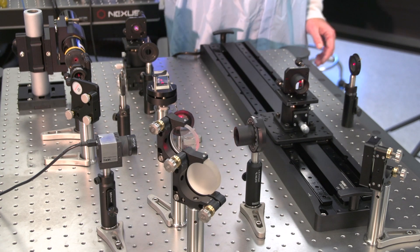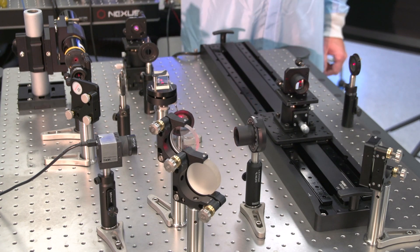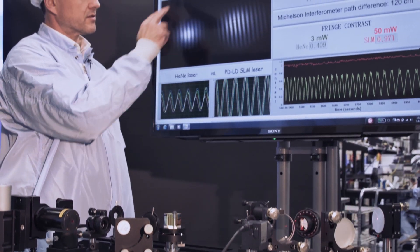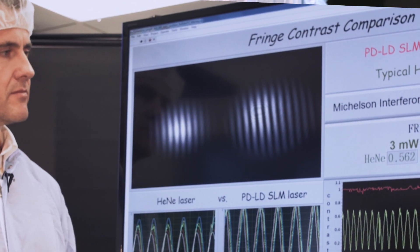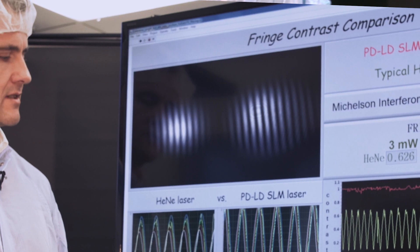Both beams meet on the camera over there and these spots can be seen on this part of the screen. This is a spot produced by helium-neon laser and this is a spot of the SLM series laser diode.